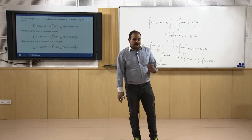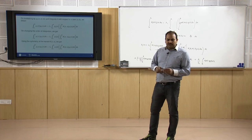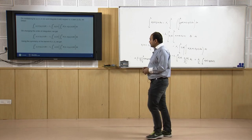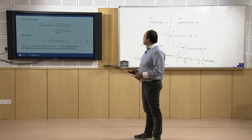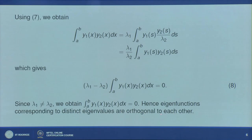This implies that corresponding to distinct eigenvalues we have orthogonal eigenfunctions. We have proved this only for the real case. For the complex case the argument also holds, but here we are discussing only the real case.